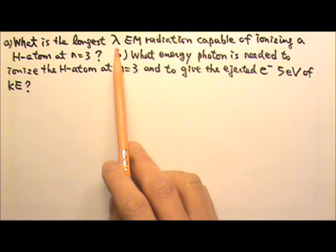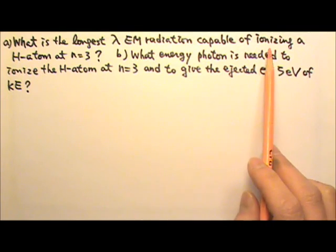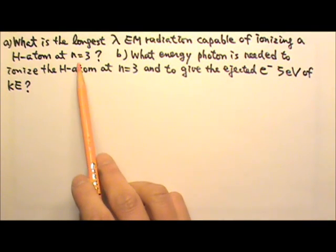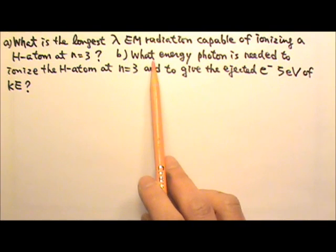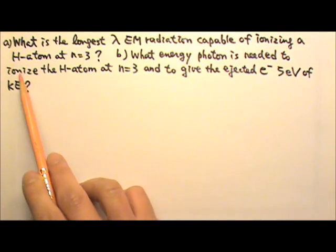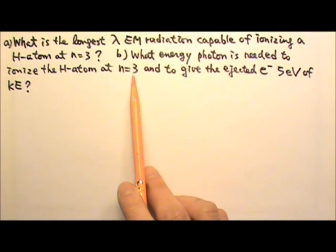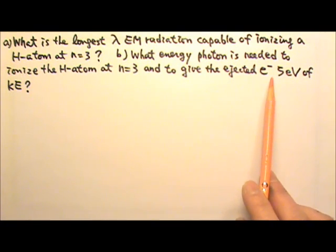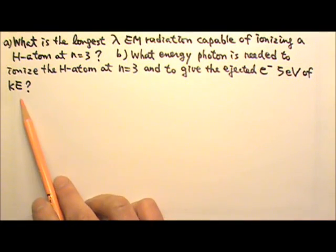What is the longest wavelength EM radiation capable of ionizing a hydrogen atom at n equals 3 state? What energy photon is needed to ionize the hydrogen atom at n equals 3 and to give the ejected electron 5 electron volts of kinetic energy?